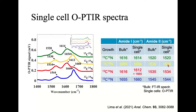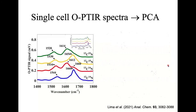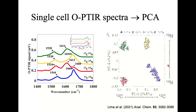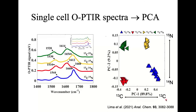Showing reproducibility via PCA, the 15 spectra per condition cluster very nicely together. The first principal component again separates ¹²C from ¹³C, accounting for about 90% of explained variance — very similar to the bulk measurement result. Remaining variance relates to ¹⁵N or ¹⁴N incorporation. Since these cells are phenotypically identical with no difference in growth rate, you can see excellent reproducibility in a multivariate sense.